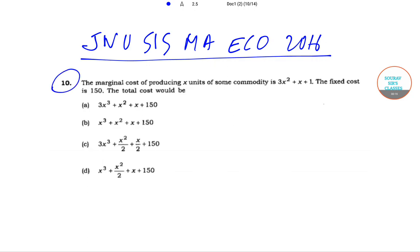Today we will be solving question number 10. In this question, we are told that the marginal cost of producing x units of some commodity is 3x² + x + 1. The fixed cost is 150.